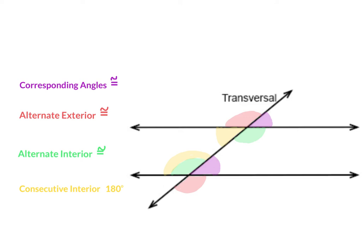I have a little sketch here of the types. The first one was corresponding — these are congruent angles that are on top of the parallel lines and on the same side of the transversal. Alternate exterior angles are on the outside of the parallel lines and on alternating sides of the transversal. Alternating interior angles are on the inside of the parallel lines and on alternating sides of the transversal.